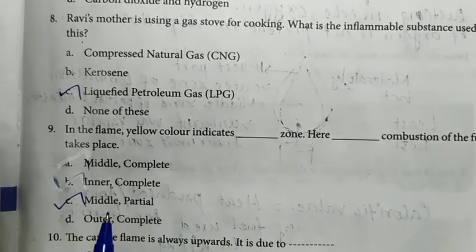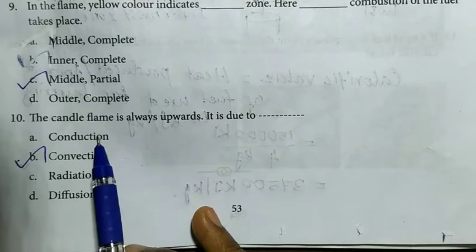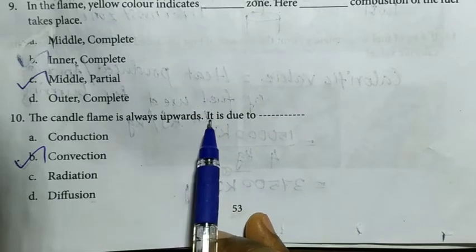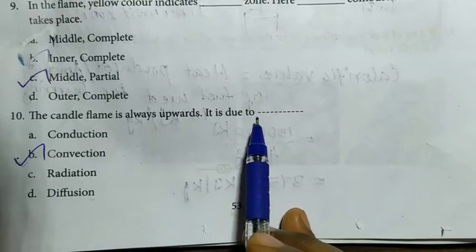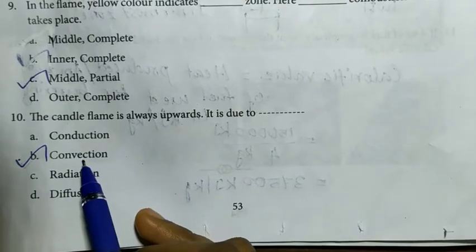Tenth question — The candle flame is always directed upwards. It is due to what? Answer is option B: Convection.